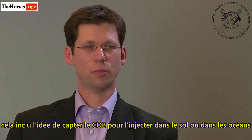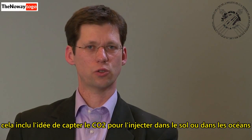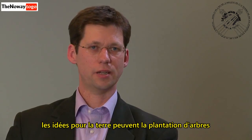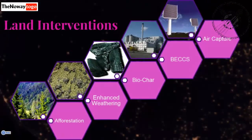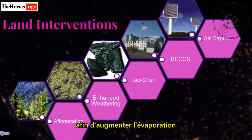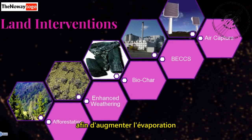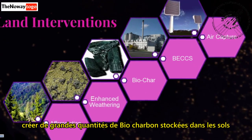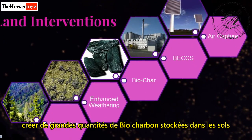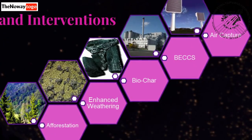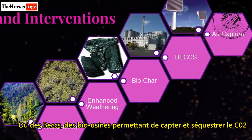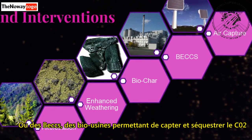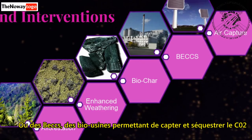These include ideas to get carbon dioxide out and store it in the land or in the oceans. On the land, ideas include planting trees, increasing the rate of weathering, making large amounts of biochar — which would be stored in the soils — or BECCS: bioenergy plants with carbon capture and sequestration.